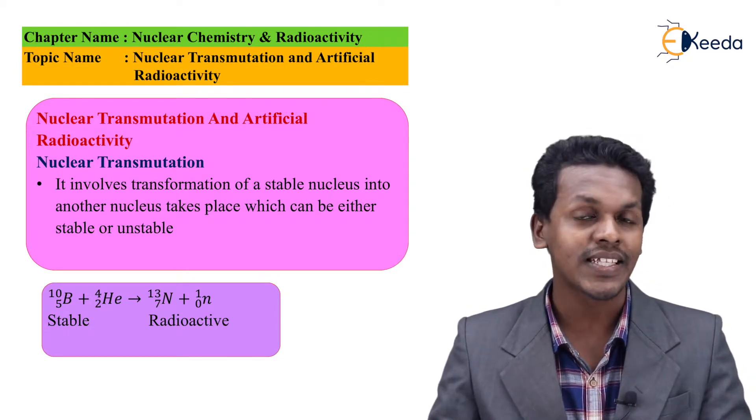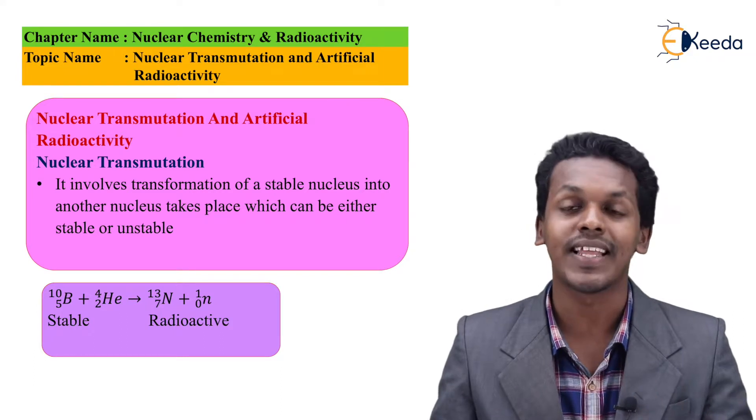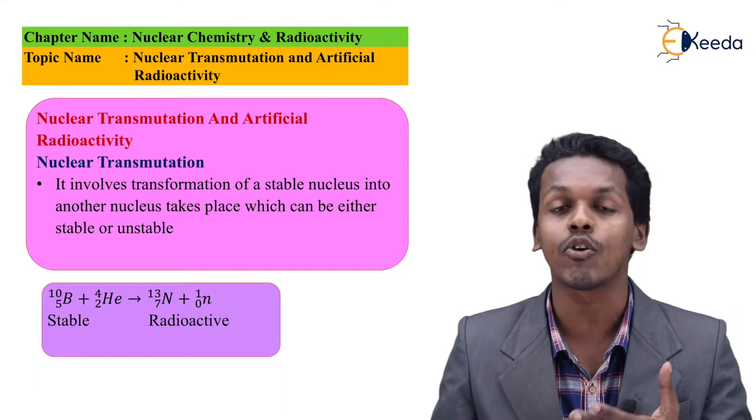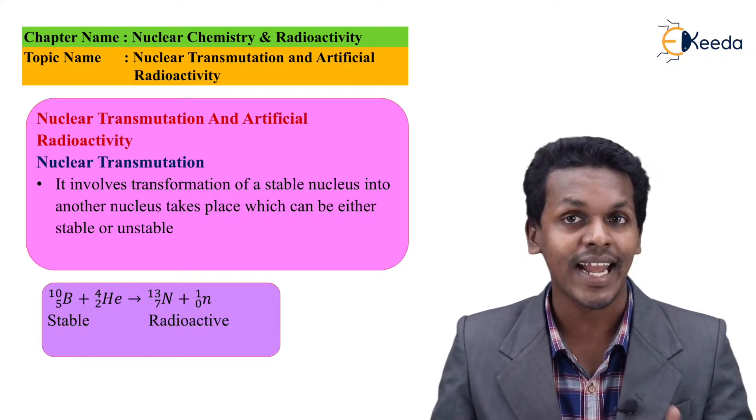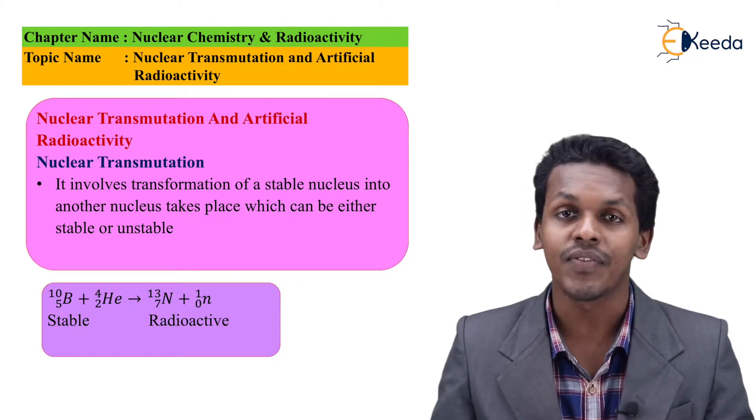the product formed is an unstable isotope - nitrogen with atomic number 7 and atomic mass number 13.